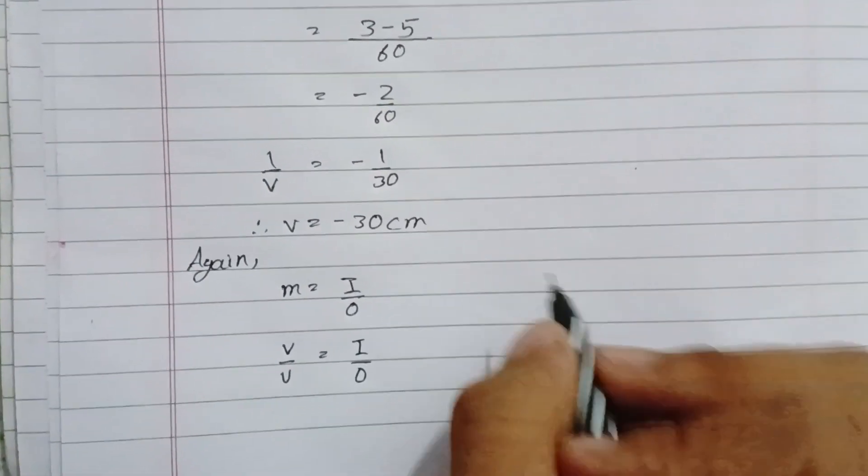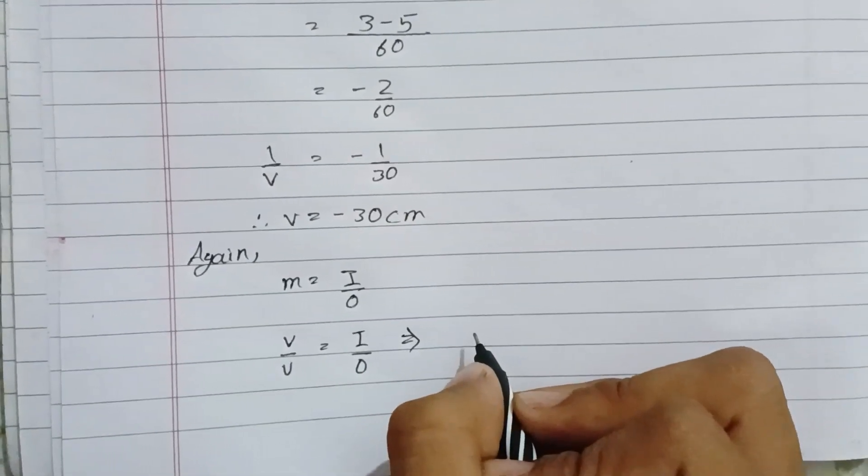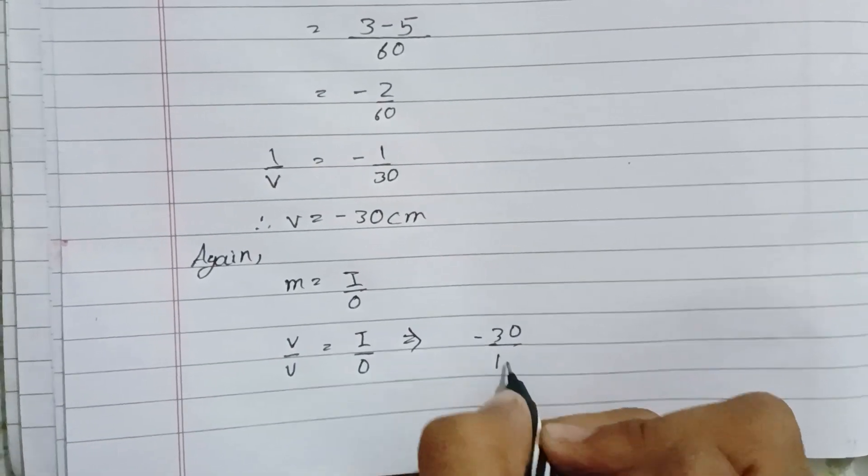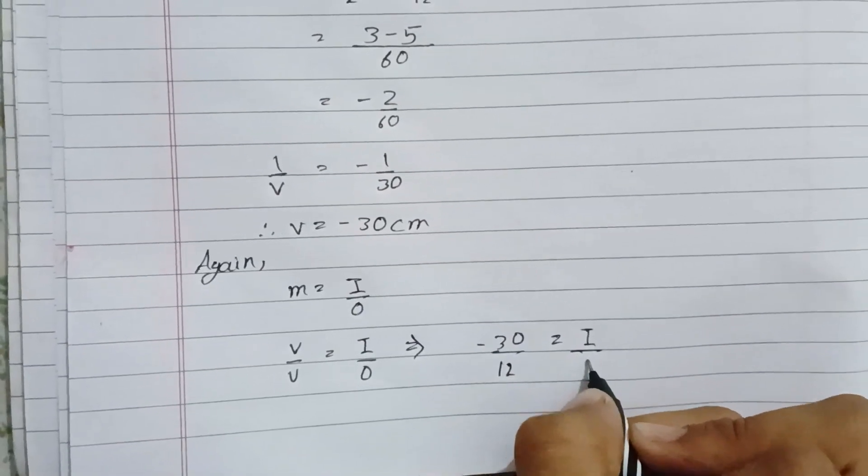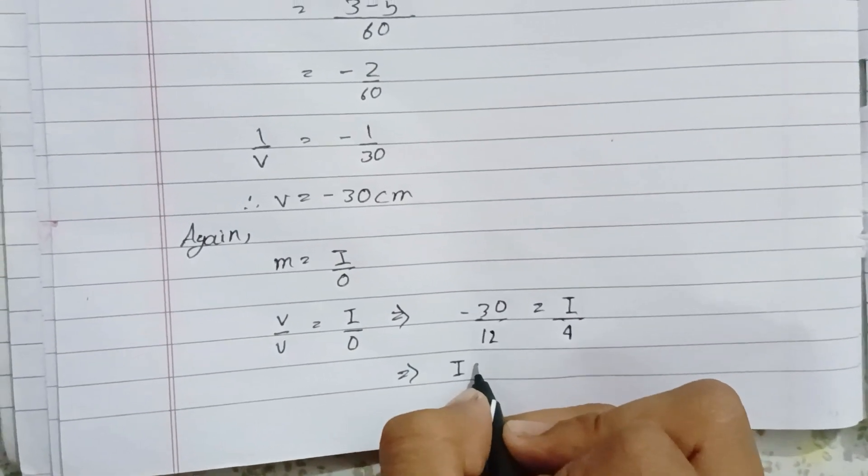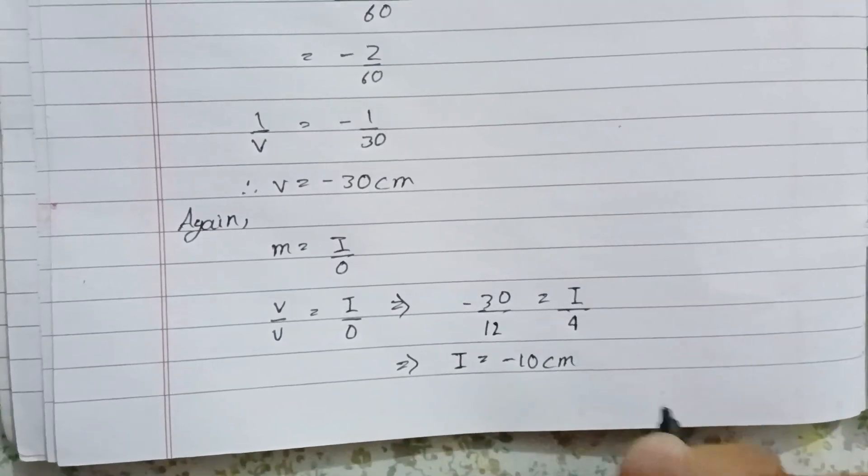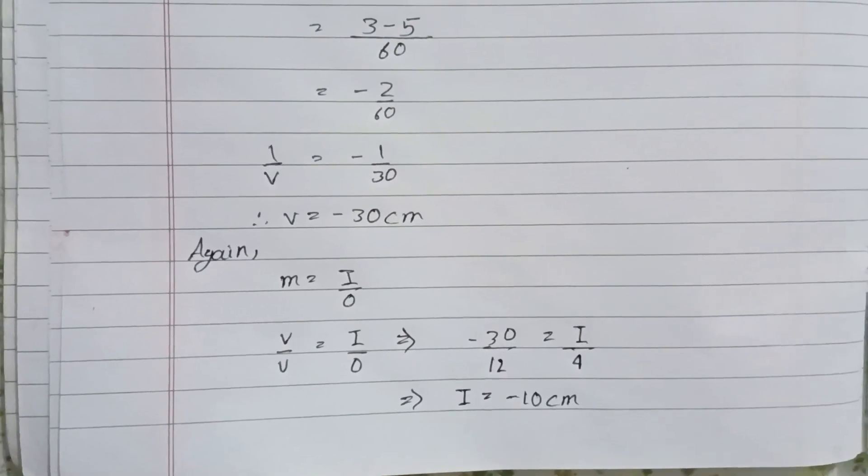Also, m equals v by u. So I by O equals v by u. Therefore, I equals O times v by u, which gives I equals 4 times minus 30 by 12, equals minus 10 centimeter.